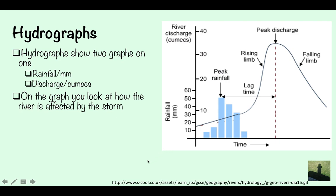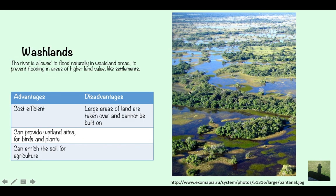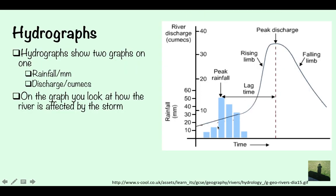Hydrographs show two graphs in one: rainfall in millimetres shown as a bar chart, and discharge shown as a line graph. The graph shows how a river is affected by a storm or rainfall. Key features include: peak rainfall — the highest point of the bar chart; peak discharge — the highest point of the line graph; lag time — the distance between peak rainfall and peak discharge; the rising limb — when discharge rises up to its peak; and the falling limb — when discharge falls away from its peak.